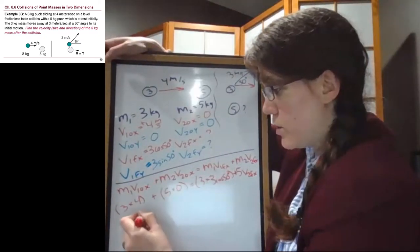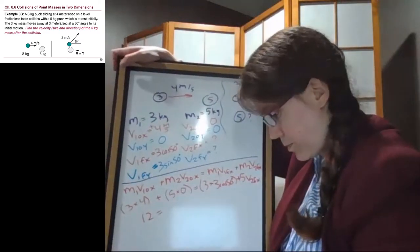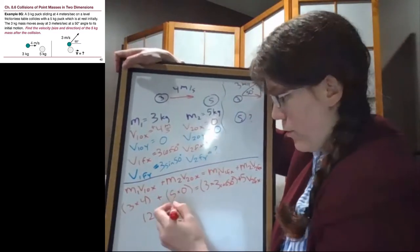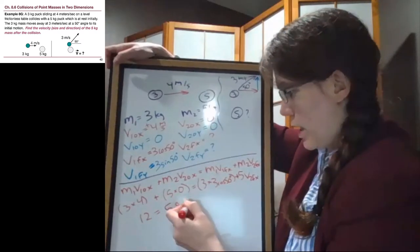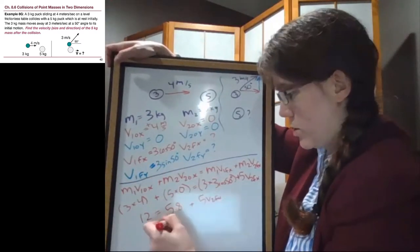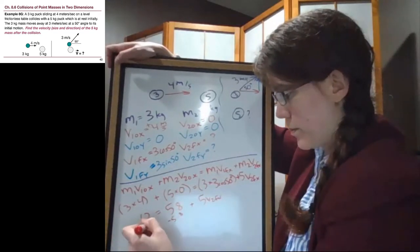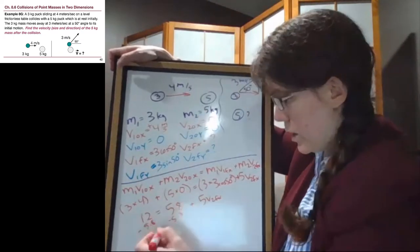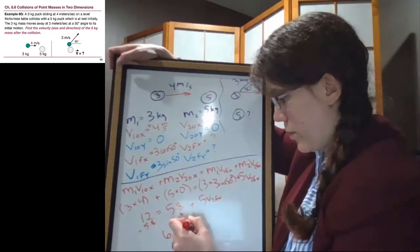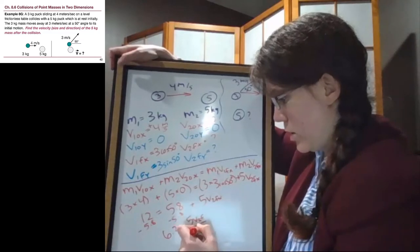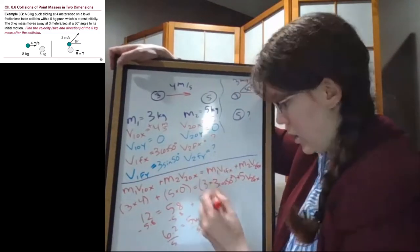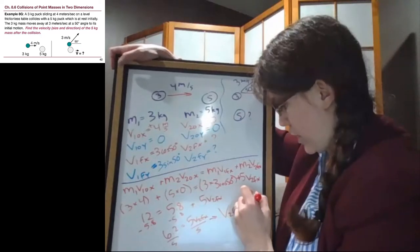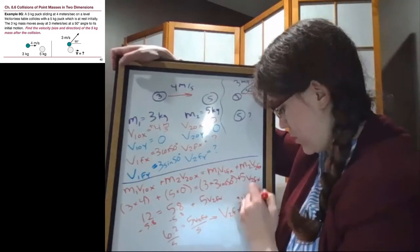All right, so this left side is 12. Then we have 5.8, and we also have 5v2fx. So we'll subtract 5.8. We get 6.2 equals 5v2fx. So if we divide both sides by 5, we will get that v2fx is 1.24. Because it came out positive, that means it's to the right.